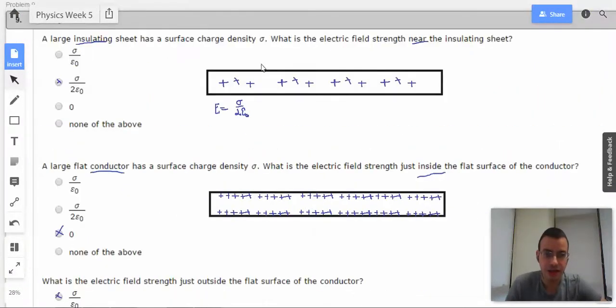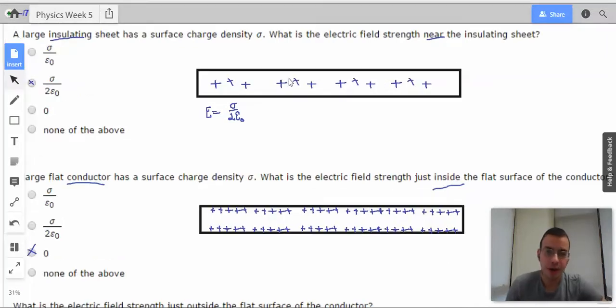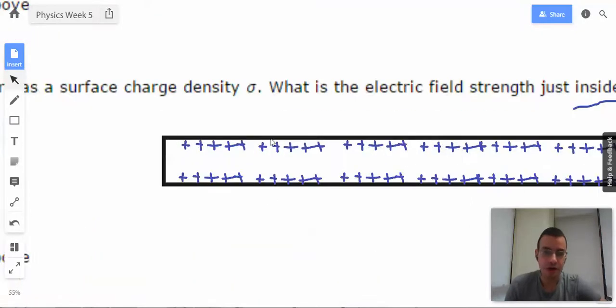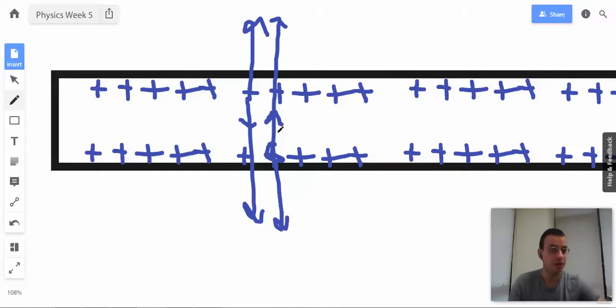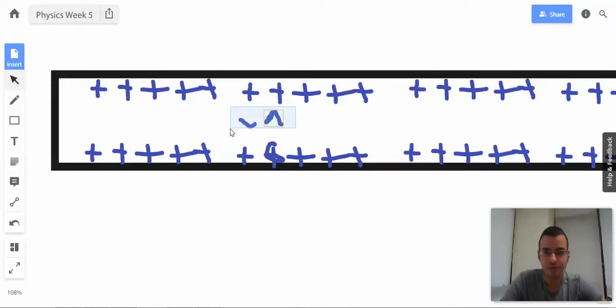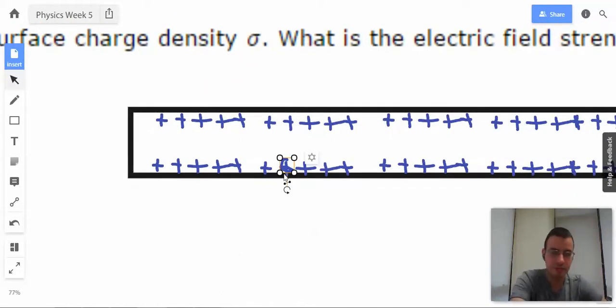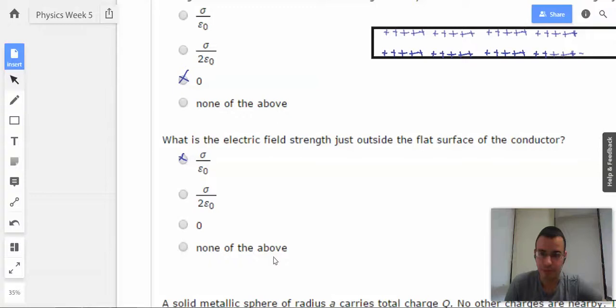The way you see that is, look at this guy with charges in the middle. This charge is going to have a field going both directions, and this charge going both directions as well. In the middle, they're going opposite directions, so they cancel and give you zero on the inside. But when you get outside of the conductor, you're going to have twice the effect. When you superpose the fields, you're going to get double.